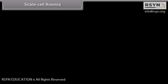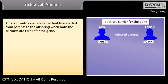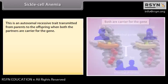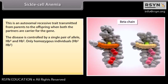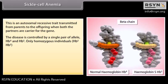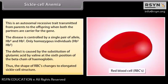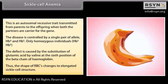Sickle cell anemia is an autosomal recessive trait transmitted from parents to offspring when both partners are carriers for the gene. The disease is controlled by a single pair of alleles HbA and HbS. Only homozygous individuals (HbS/HbS) are affected. The defect is caused by the substitution of glutamic acid by valine at the sixth position of the beta chain of hemoglobin, causing RBCs to change to an elongated sickle cell structure.